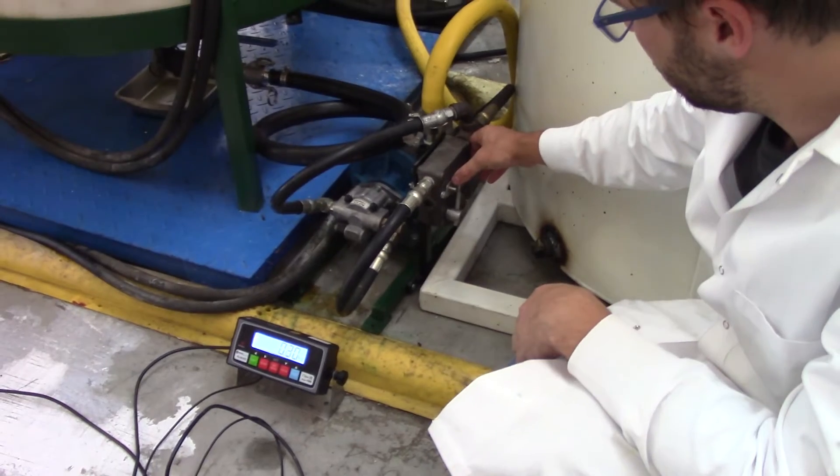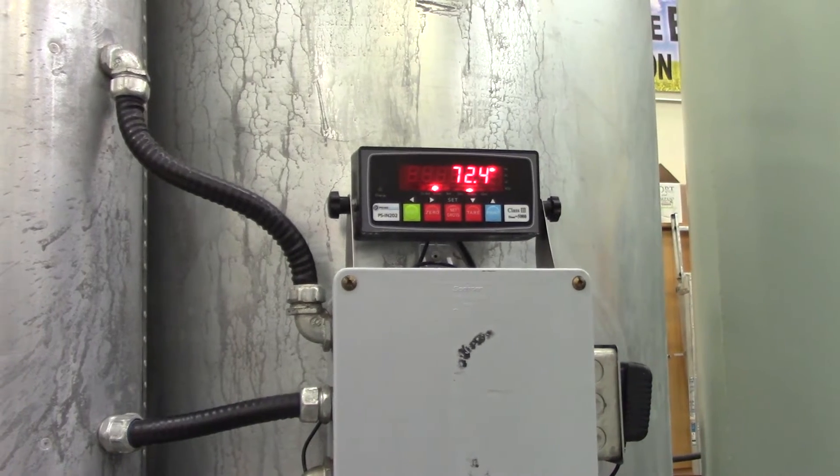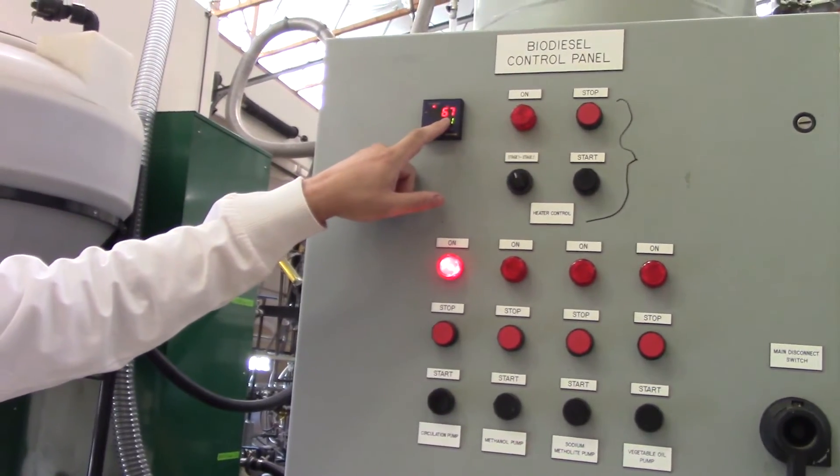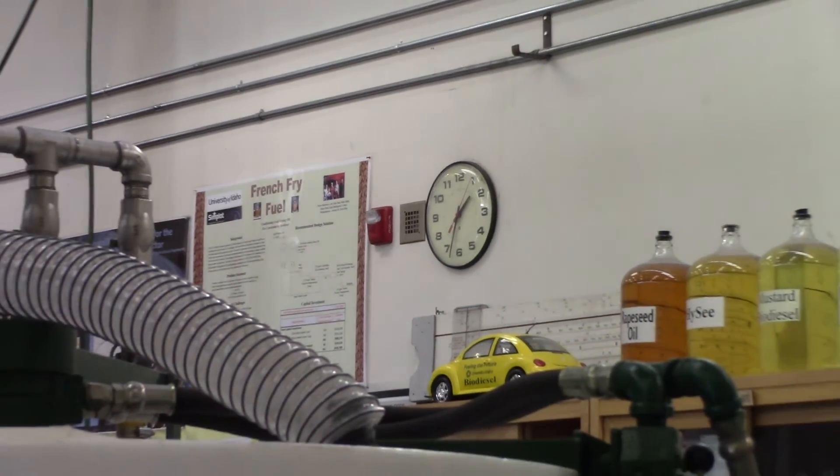These are mixed together, then pumped into the reactor with the oil. Once the three ingredients are inside, the reaction begins. The reactor maintains a temperature of about 60 degrees Celsius while the circulation pump stays on. The reaction will take about an hour.